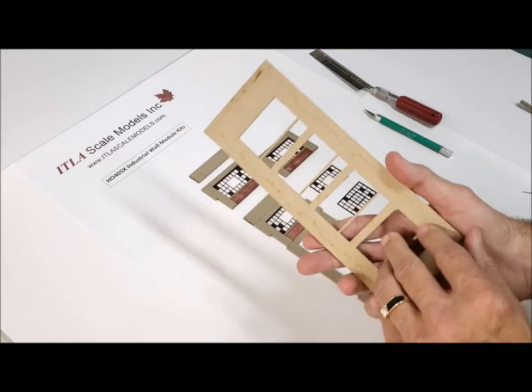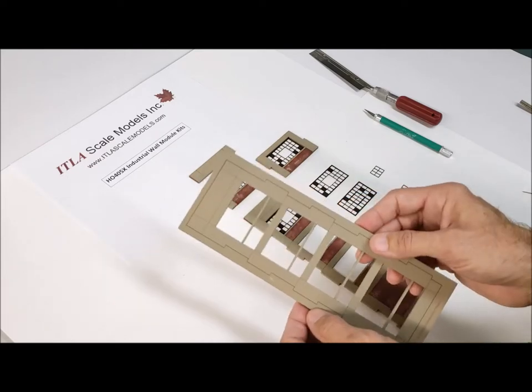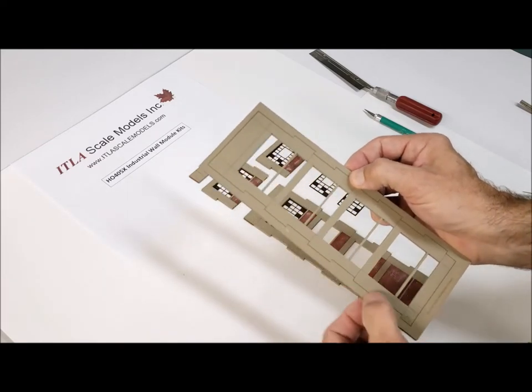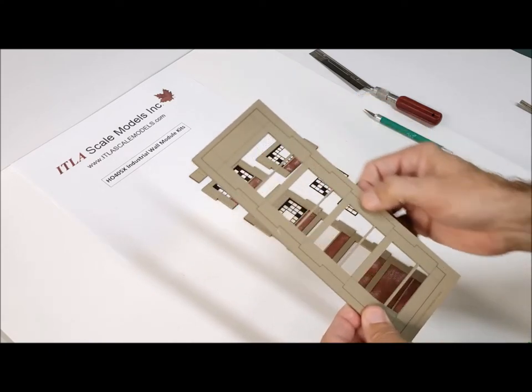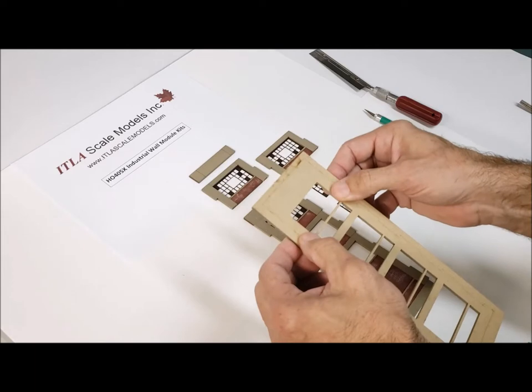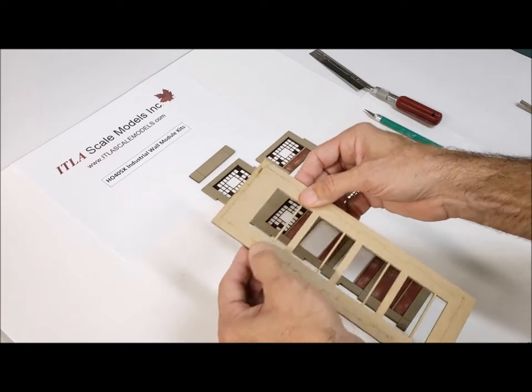But I want to share with you first of all how we get our panels out of the carrier sheets, and it's a very simple process. It's been designed to have some friction fit in each of these joints so that you can actually assemble, test, and dry fit parts before you glue.